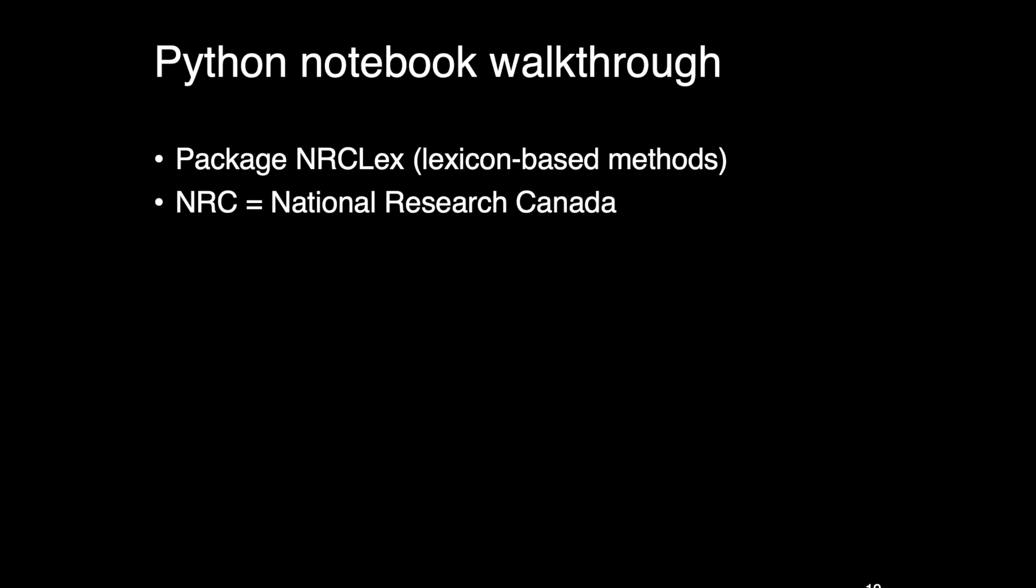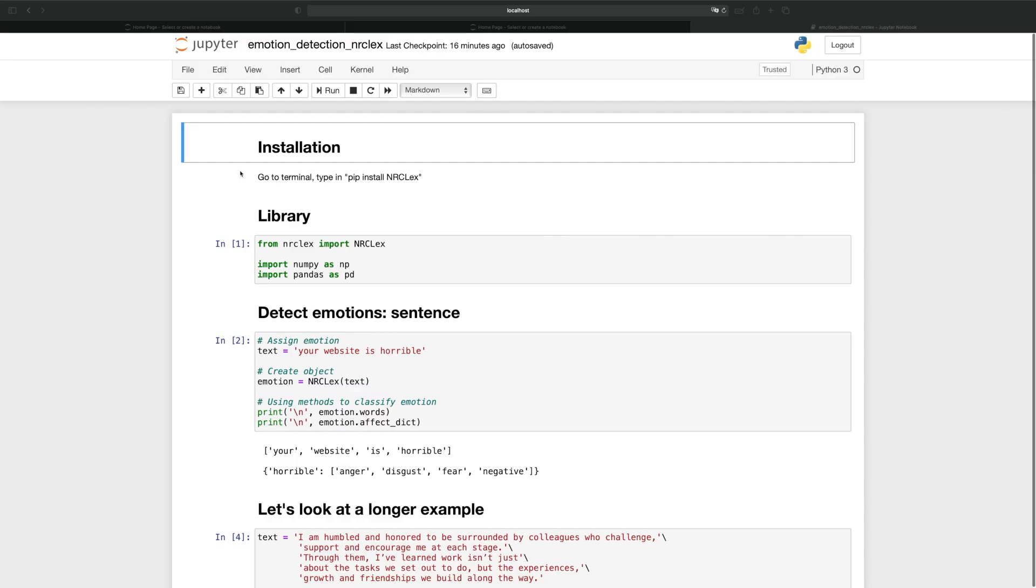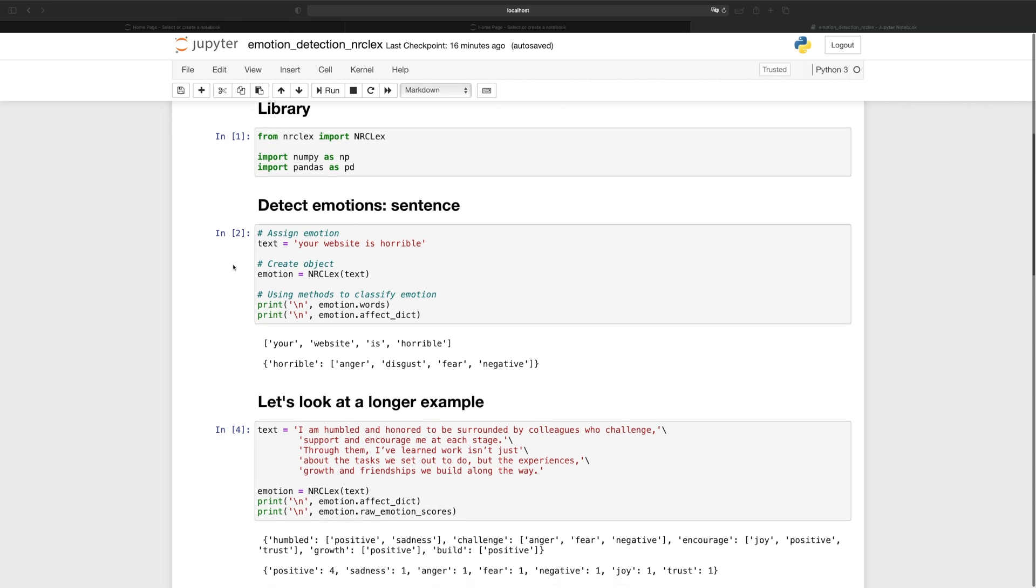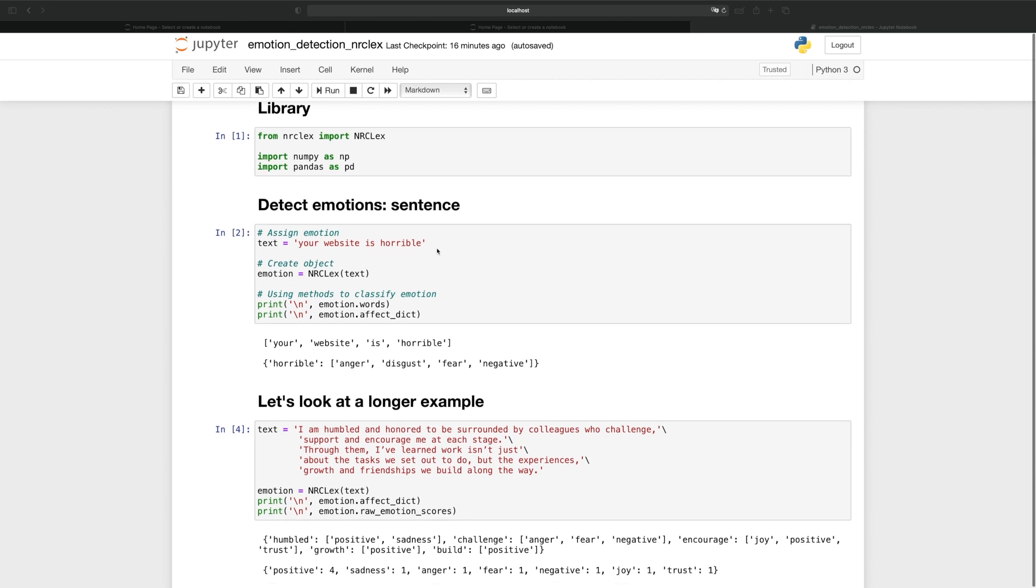And finally, we're going to take a look at the Python notebook walkthrough using the package NRC-Lex. NRC stands for National Research Canada. They are the researchers who built the corpus that supports this library. To install the packages, simply go to your terminal and type in pip install NRC-Lex. The other two libraries used in this tutorial are NumPy and Pandas. Let's say we have a natural language sentence that is your website is horrible. We're going to feed it to NRC-Lex and then make this thing an object called emotion.